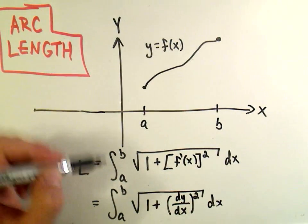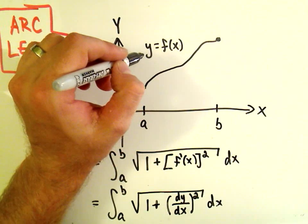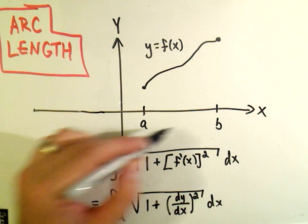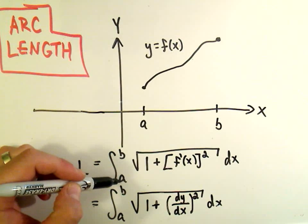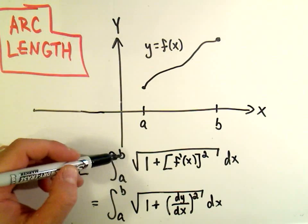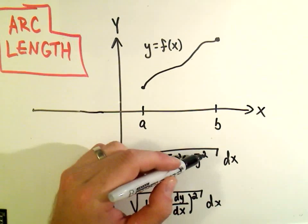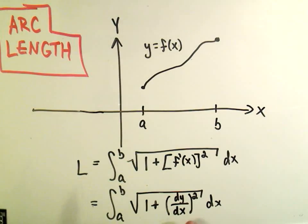The formula says if your function is in the form y equals f of x, and the x-coordinates are from a to b, to calculate arc length you integrate from a to b the square root of 1 plus the derivative squared. That's alternate notation for the derivative dy dx.